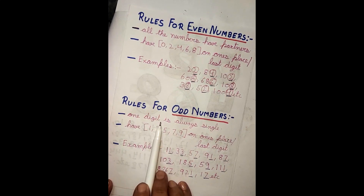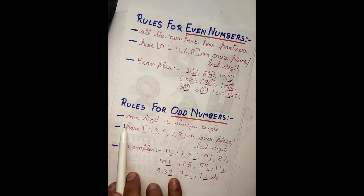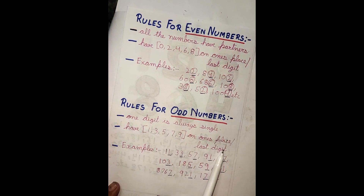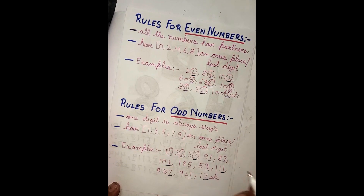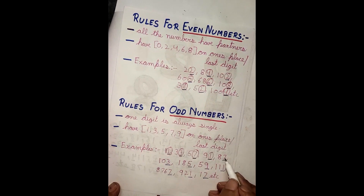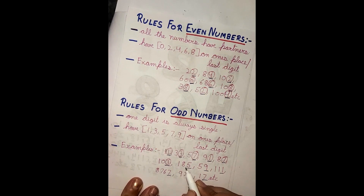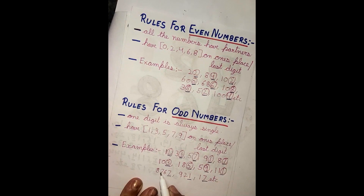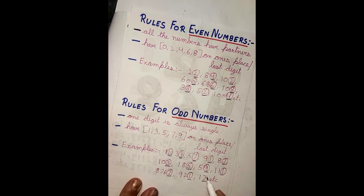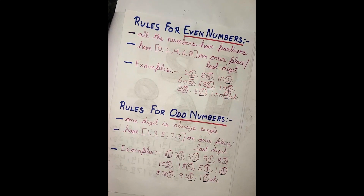The rule for odd numbers: one digit is always single. Odd numbers have 1, 3, 5, 7, or 9 on the ones place — the last digit. Examples: 11, 33, 57, 91, 87, 103, 185, 59, 67, 921, and 17. All these last digits are 1, 3, 5, 7, or 9, so we call them odd numbers.